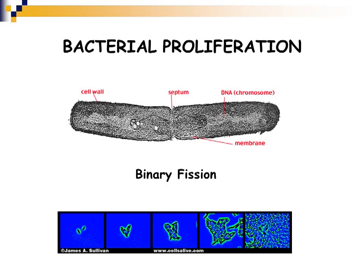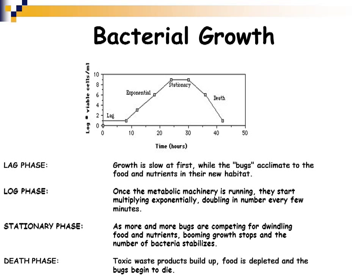Bacteria grow in stages, usually starting in the lag phase, where growth starts slowly. This is when a bacterium enters a new environment and needs to acclimate, so it won't start doubling at its normal rate. When it does start doubling at its normal rate, it enters the log phase — metabolic machinery is running smoothly and organisms are in exponential growth. E. coli, for example, has around a 20-minute doubling time.